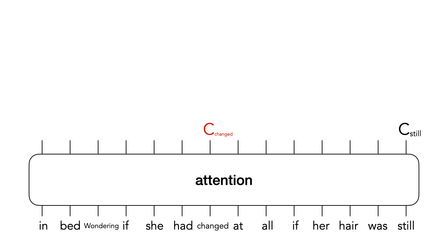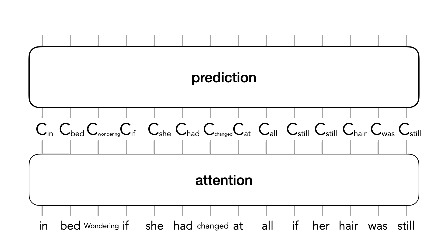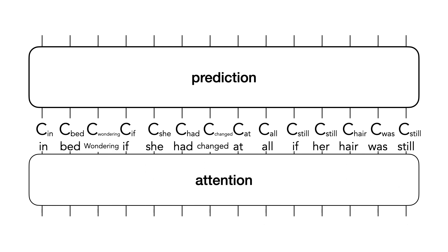In the end, the attention network generates a context vector for every word. Then these context vectors are fed into the prediction network along with the original words.